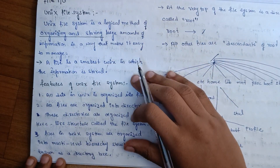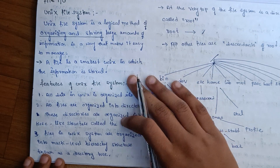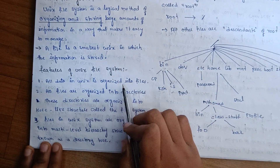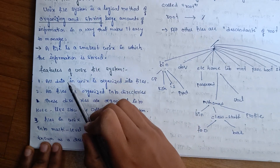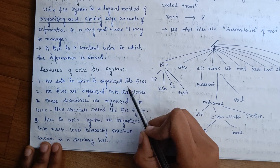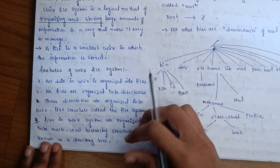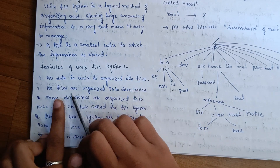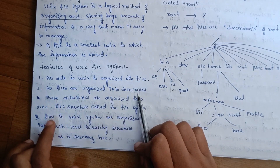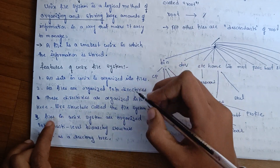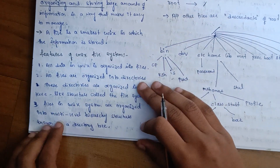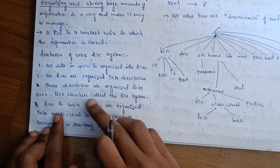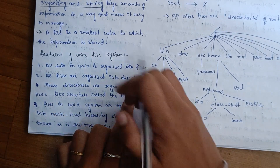The features of the Unix File System: All data in Unix is organized into files. All files are organized into directories. The directories are organized into a tree-like structure called the file system.